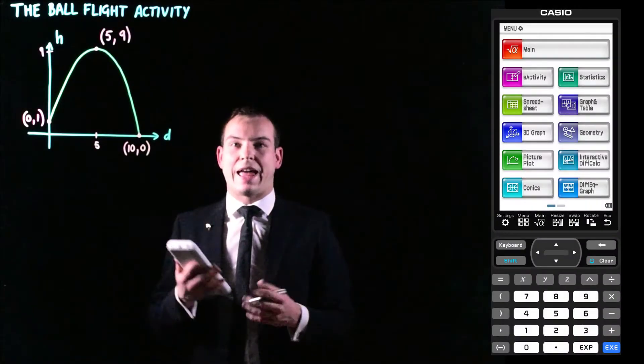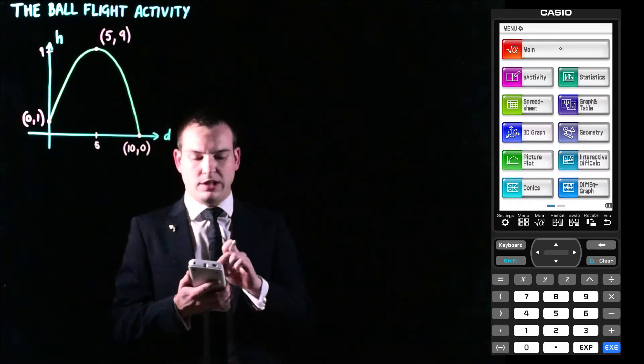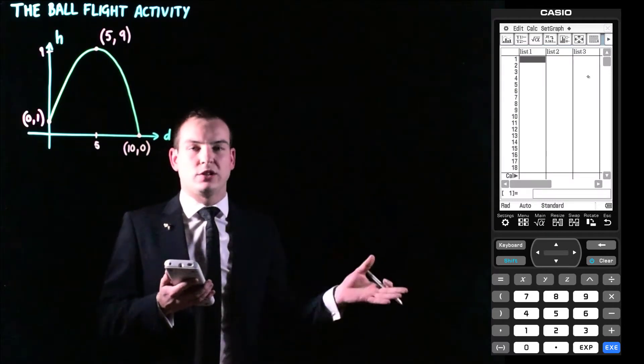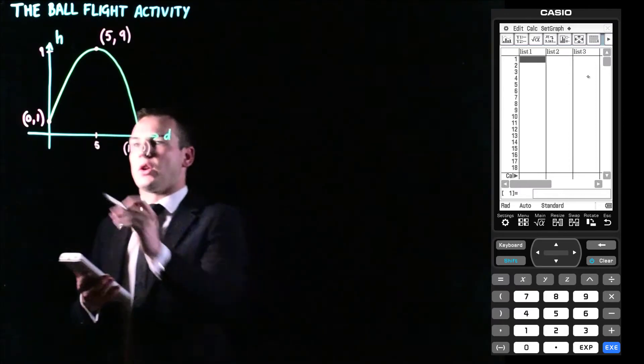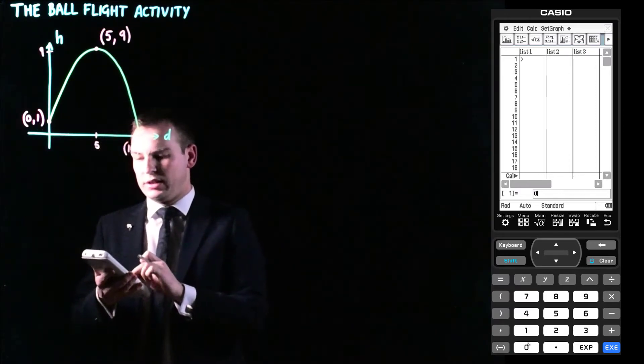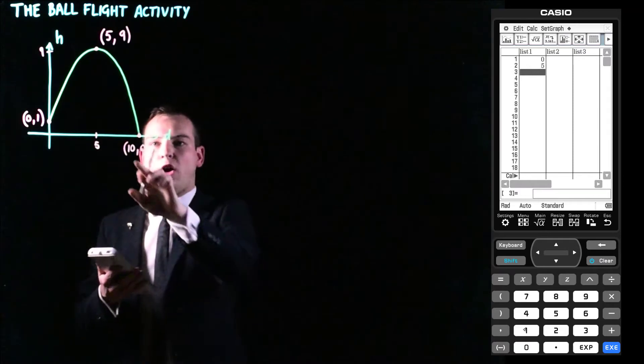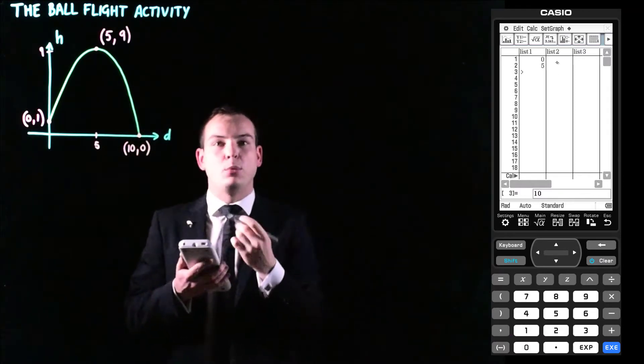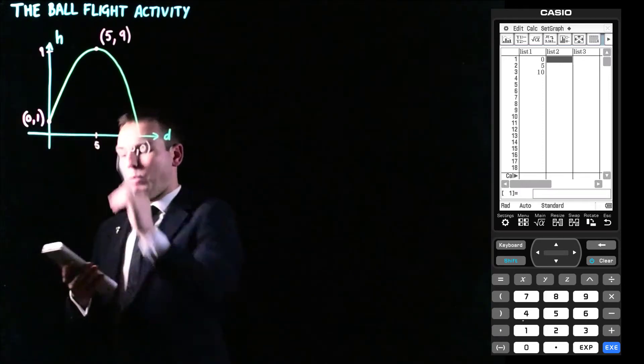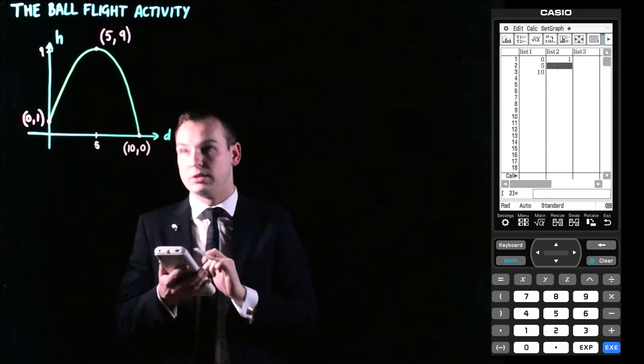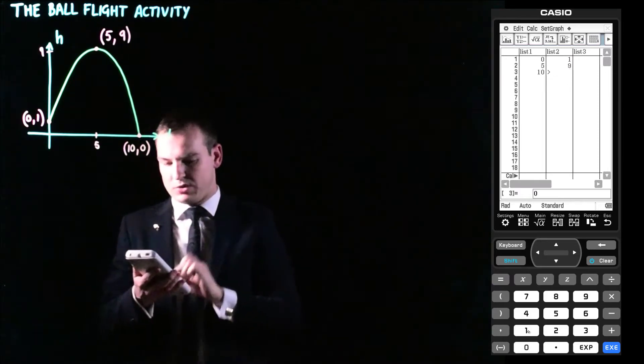So next up you'll need to grab out a CAS calculator of some description. And for this particular model, I'm going to need to go into the statistics menu. And you can see what I'm doing just over here. So in list one, I'm going to put the X values of these coordinates. So I'm going to have zero as my first one. And then going down list one, the next number I'll put in is five. And then going down again, I'll put in ten. And now moving to list two, I'm going to put the Y values of each of those coordinates. So zero was paired up with a Y value of one. So I'll put one in that position. Five was with nine. So I'll put a nine there. And then ten was with zero. So I'll put a zero here.